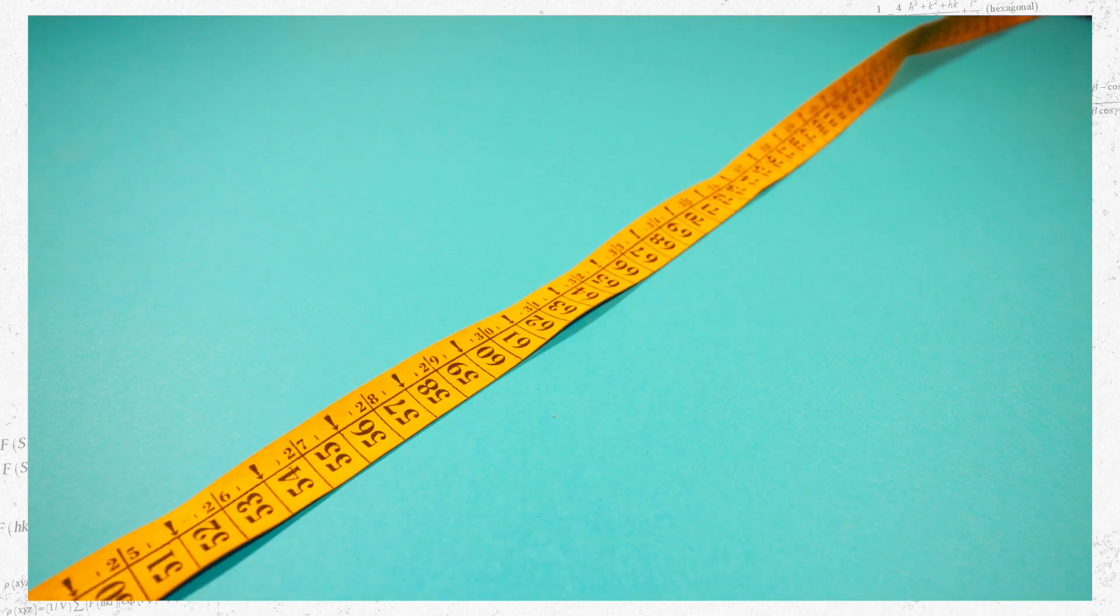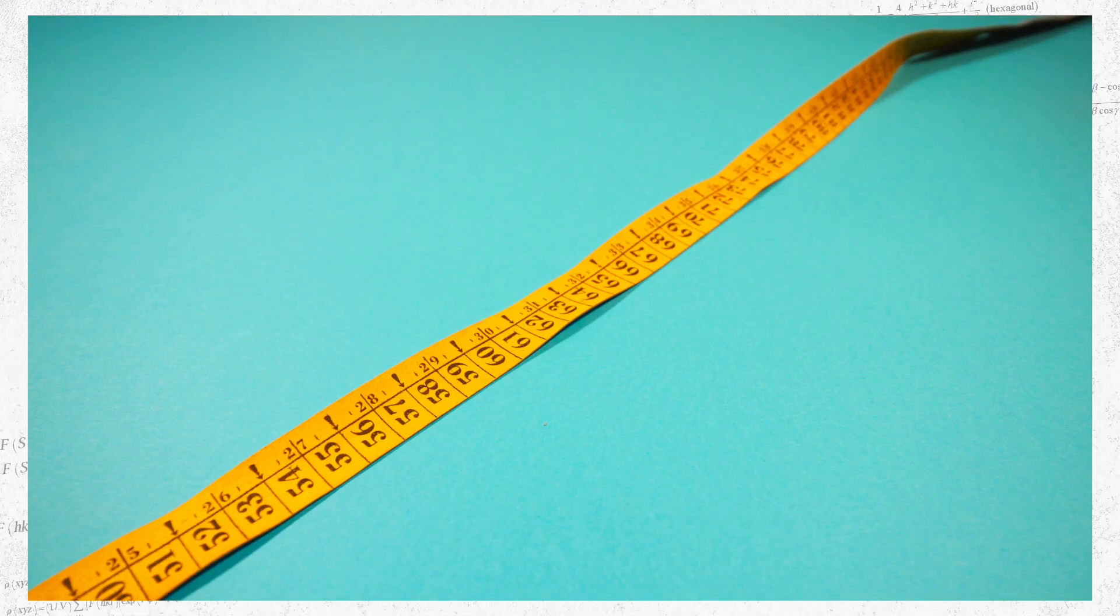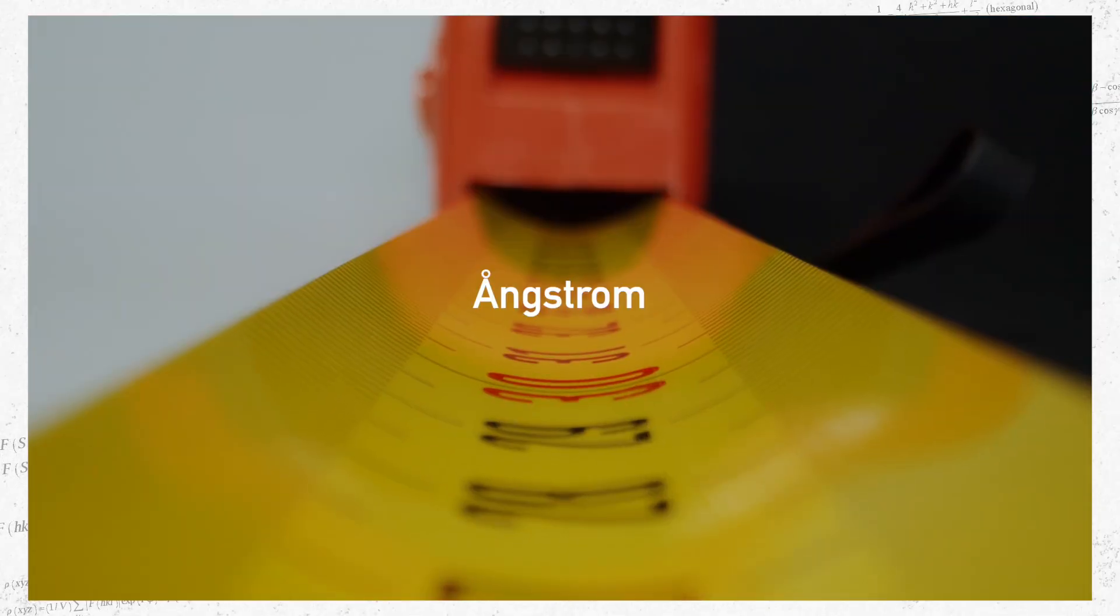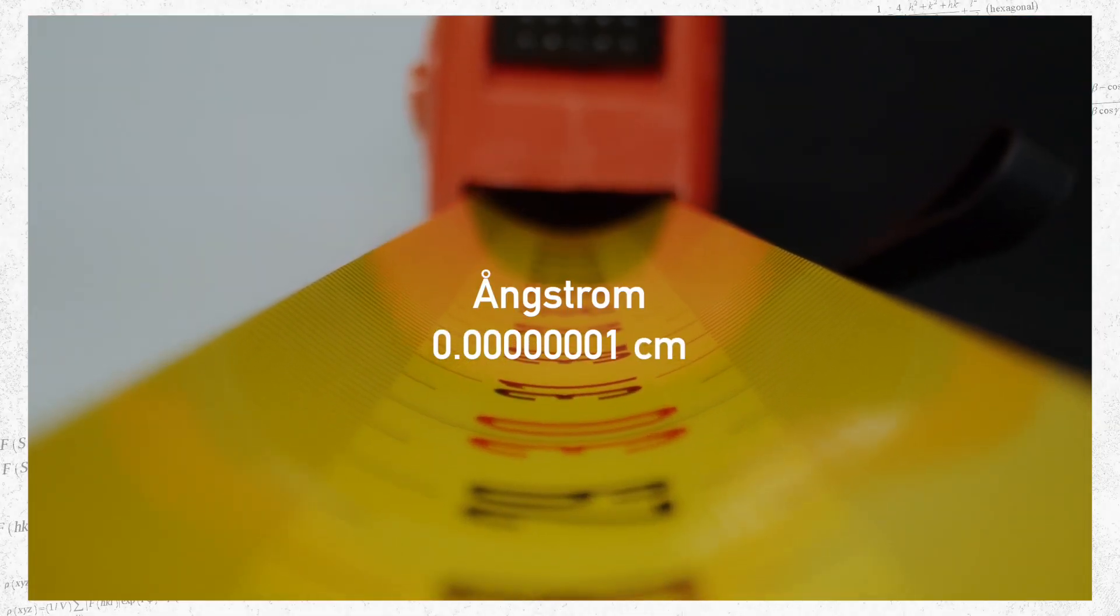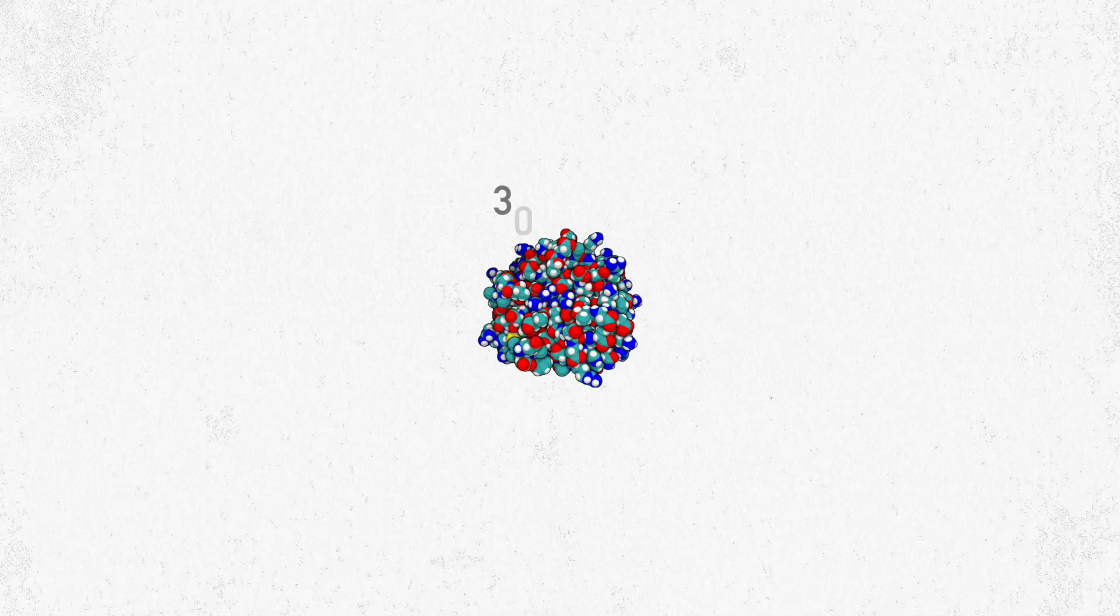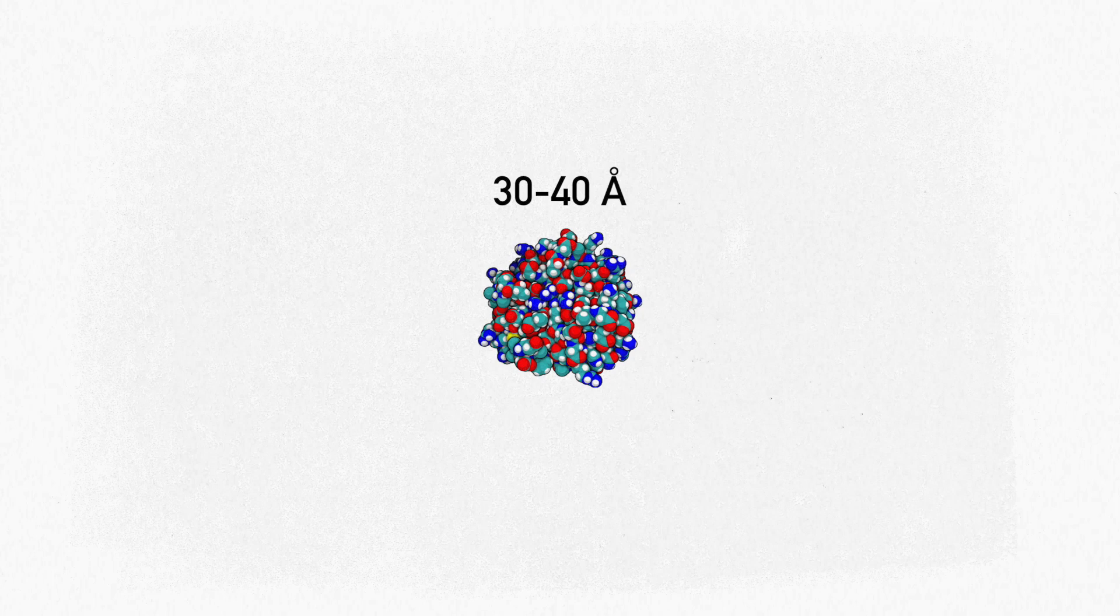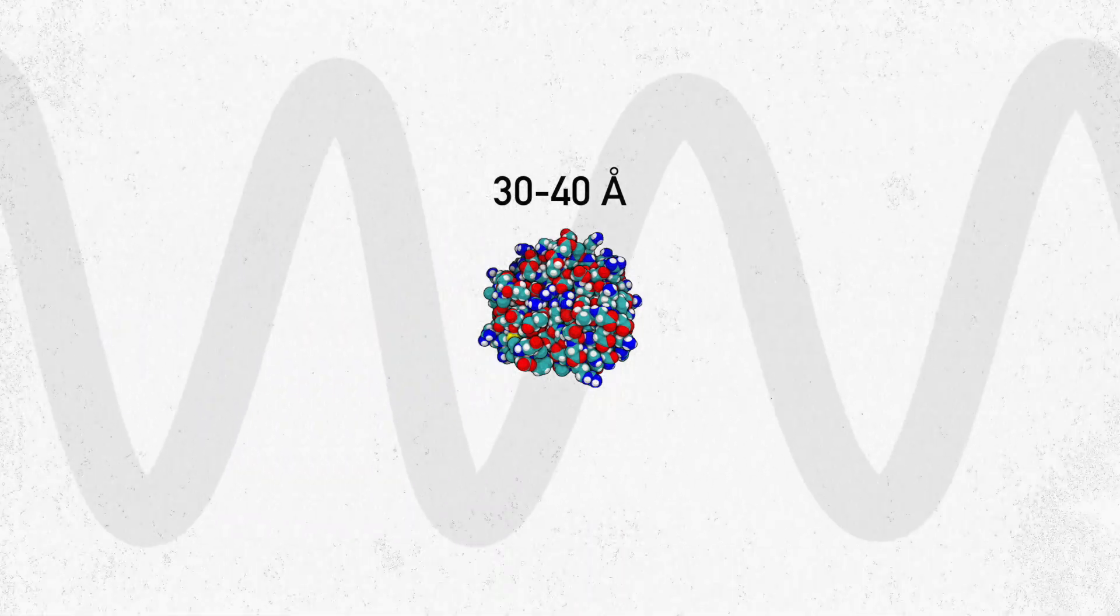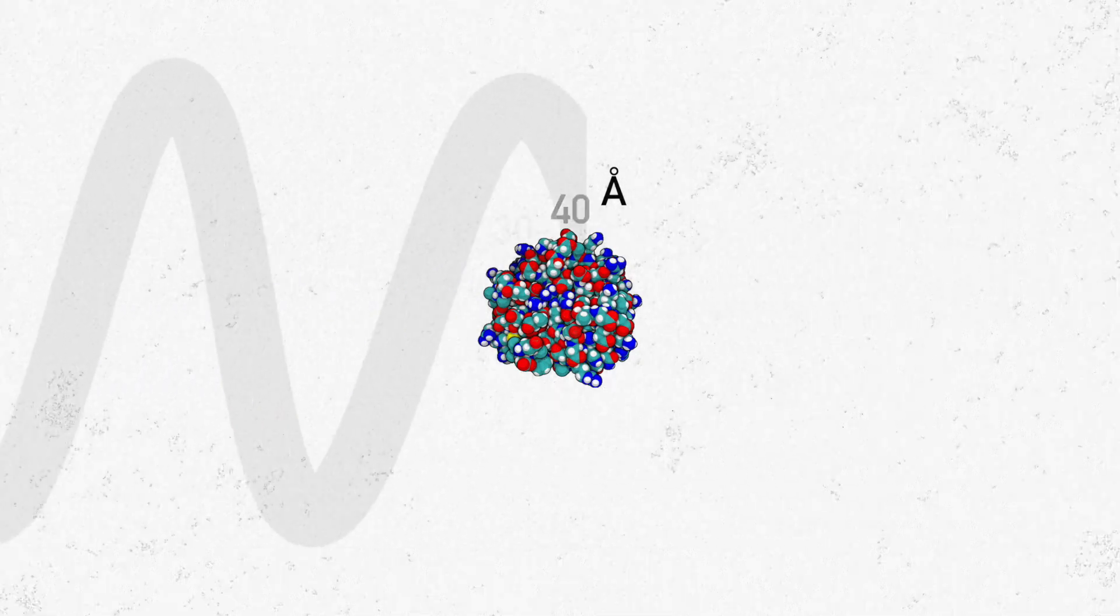They're so small that we use a special unit of length to talk about them. Not inches or millimeters, but angstroms. One angstrom is equal to one hundred millionth of a centimeter. A protein designed by Foldit players might be only 30 or 40 angstroms across. That's 100 times smaller than the wavelengths of visible light, and about a million times smaller than a poppy seed.